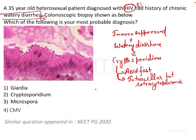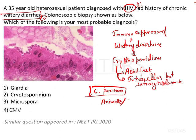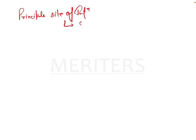Regarding the life cycle: infection in human beings is generally caused by Cryptosporidium parvum, the parasite that most commonly infects humans. Regarding the mode of infection, it is acquired from animals and from human feces. The principal site of infection is the surface of villi of the lower small bowel.